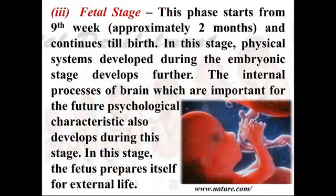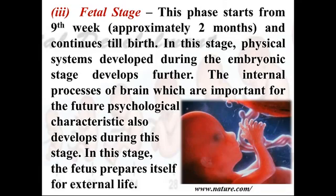The fetal stage starts from the ninth week — approximately two months after conception — and lasts until birth. To summarize: the germinal stage is weeks 0 to 2, the embryonic stage is weeks 2 to 8, and the fetal stage runs from week 9 until birth. In this stage, the physical systems developed during the embryonic stage develop further. There is no new structural development, but growth continues. Internal brain processes, very important for future psychological characteristics, also develop during this stage.